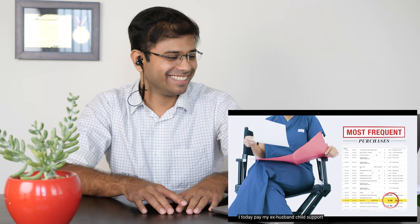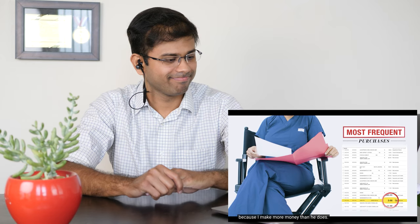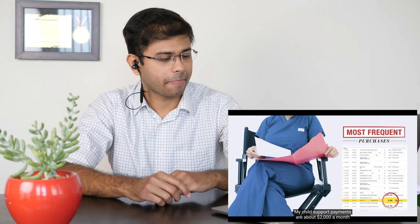Some check for child support or something like that. I today pay my ex-husband child support because I make more money than he does. My child support payments are about two thousand dollars a month, and they go towards paying for a babysitter when my daughter is at my ex-husband's home. I'm like, if you need a babysitter, why should she be there? Stupid idiot. Sorry.